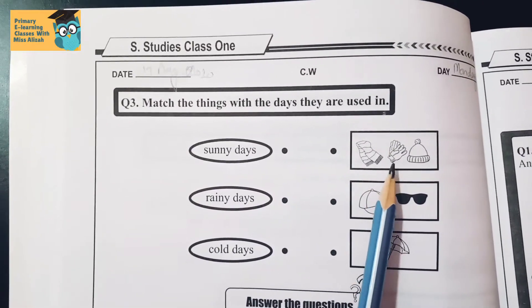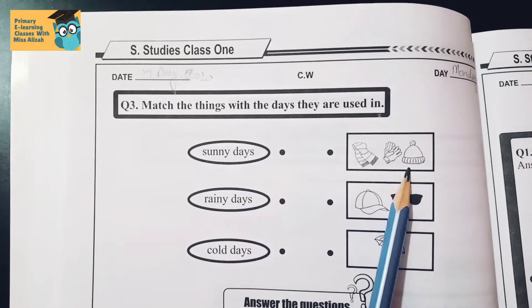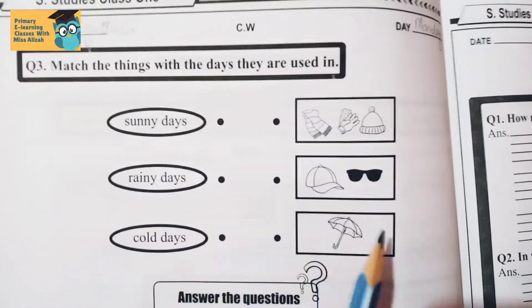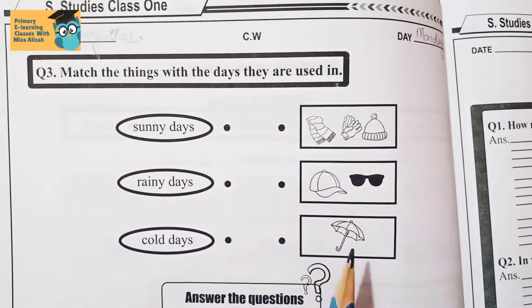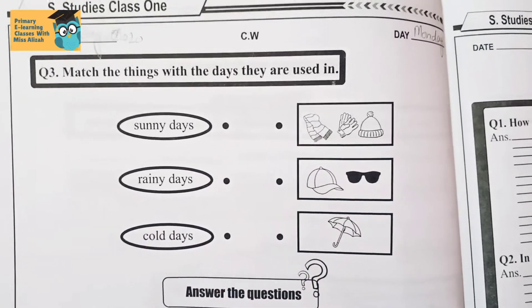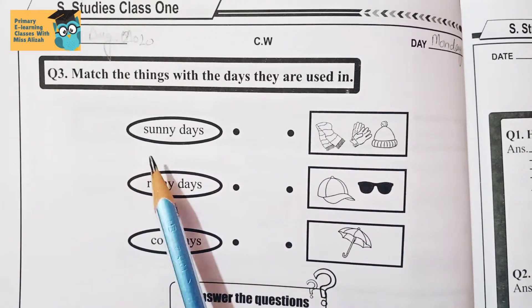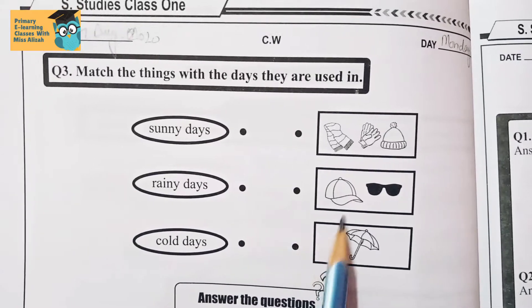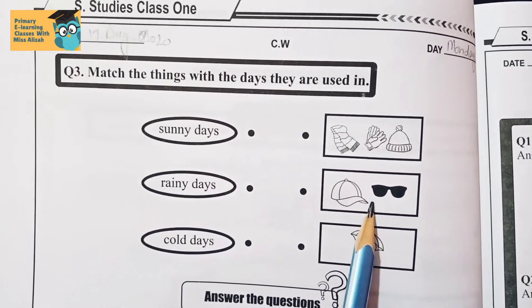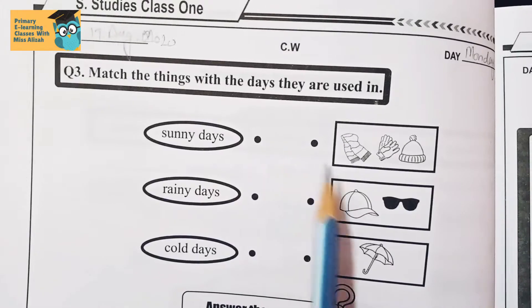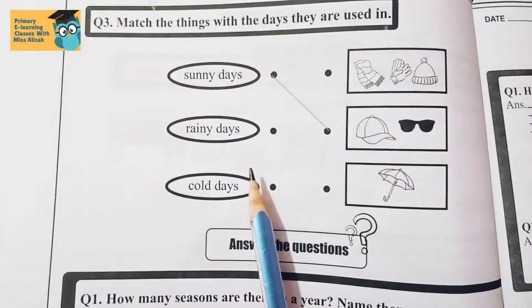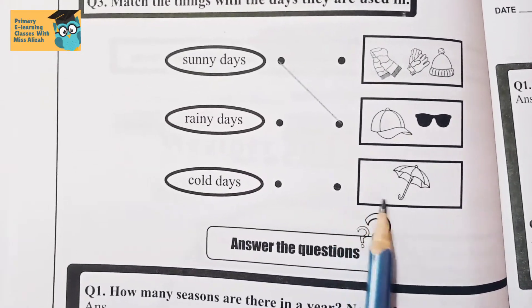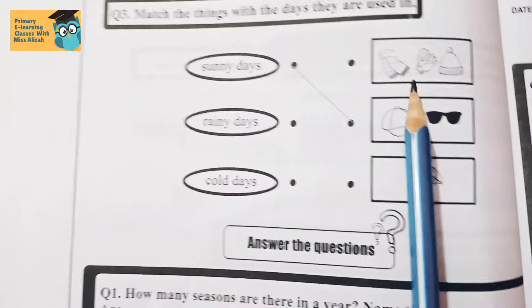What do you use on sunny days? You use a cap, which protects you from the sun, and sunglasses — so match those to sunny days. For rainy days, obviously you use an umbrella. For cold days, you use warm woolly things like mufflers, gloves, and a woolen hat. So you need to match these correctly.